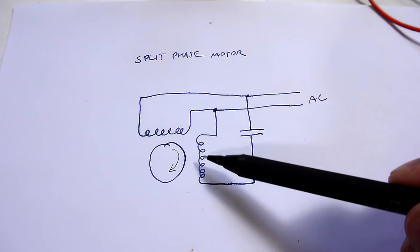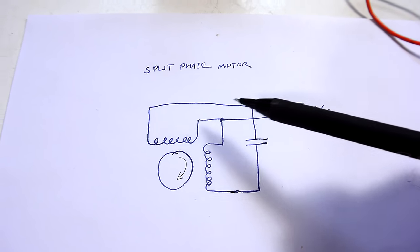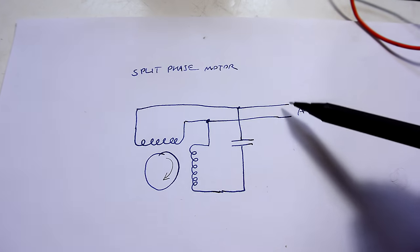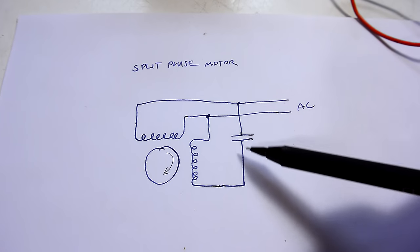This is the schematic for the induction motor where we have two windings that are at a right angle. One of these windings is connected directly to AC whereas the other one is in series with a capacitor.